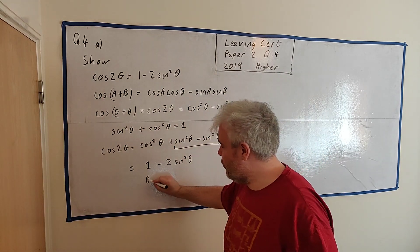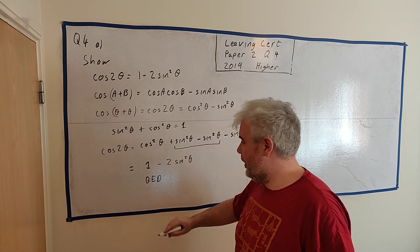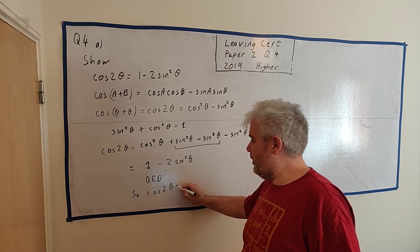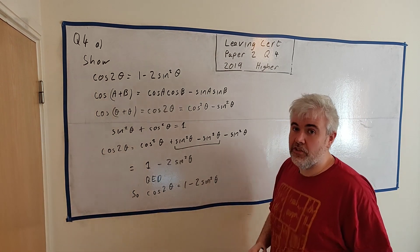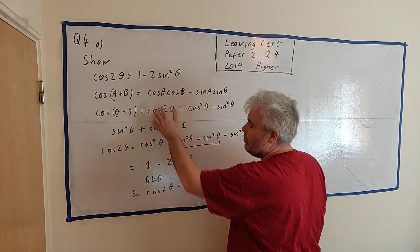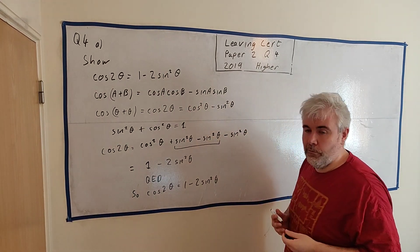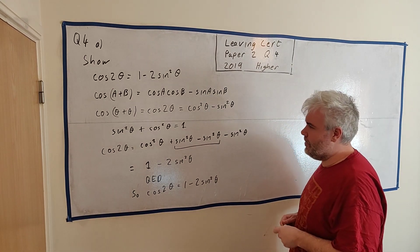And that is what they asked us. So you could at the end just write QED, but I'd rather write something like, so cosine 2 theta is equal to 1 minus 2 sine squared theta. Make sure you're writing something at the end. If they ask you to show something, tell them you've done it. If they ask you to prove something, tell them you've proven it.